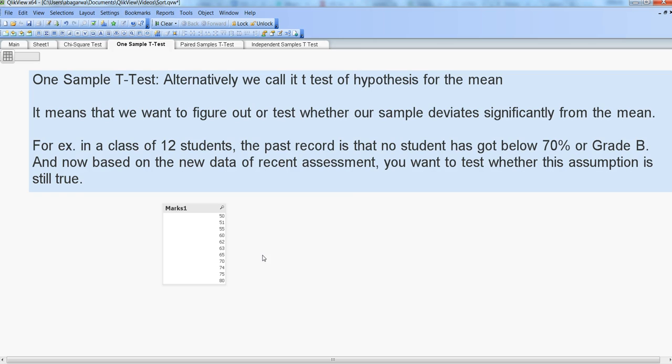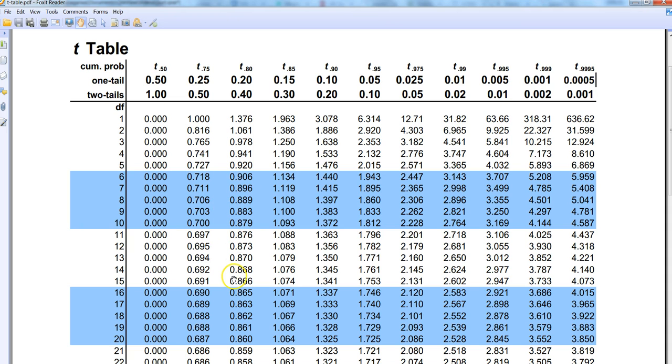The other is the two-tail test, meaning you want to test on both sides and figure out whether the t-test value is coming within that range. I know it's a little difficult to get, but we're going to utilize a t-table that will help us drive this conversation.